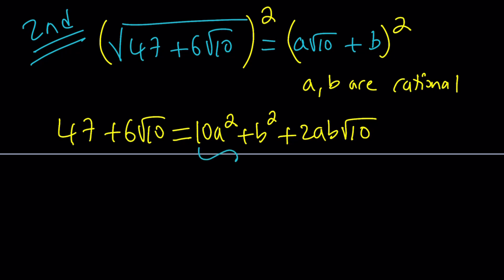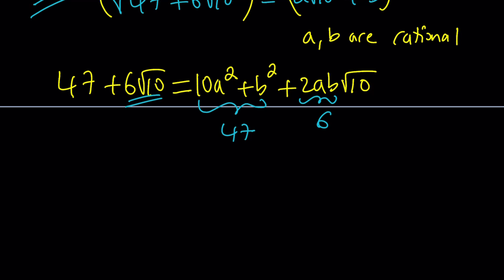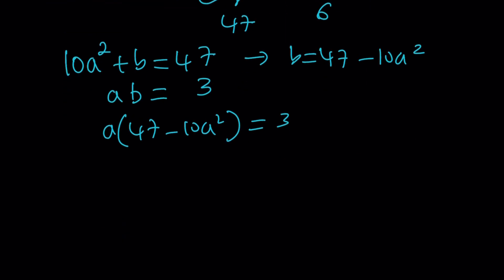So here's how it goes. I want this to be 47 and I want 2ab to be 6 because the coefficient of √10 is 6 on the left-hand side. So this gives us a system of equations, which should be fairly easy to solve. One thing that's interesting happens here though. For example, if I isolate b from here, I get 47 minus 10a² and when I plug it in, I actually get a cubic equation. We're going to get 10a³ minus 47a plus 3 equals 0.